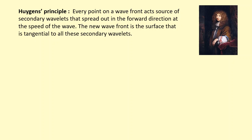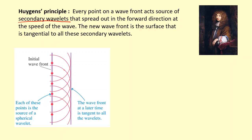The alternative to Newton's corpuscular theory was Huygens' principle. Huygens said that every point on a wavefront acts as a source of secondary wavelets, and that these secondary wavelets spread out in the forward direction at the speed of the wave. The new wavefront is the surface that is tangential to all of these secondary wavelets, as shown in this picture here.